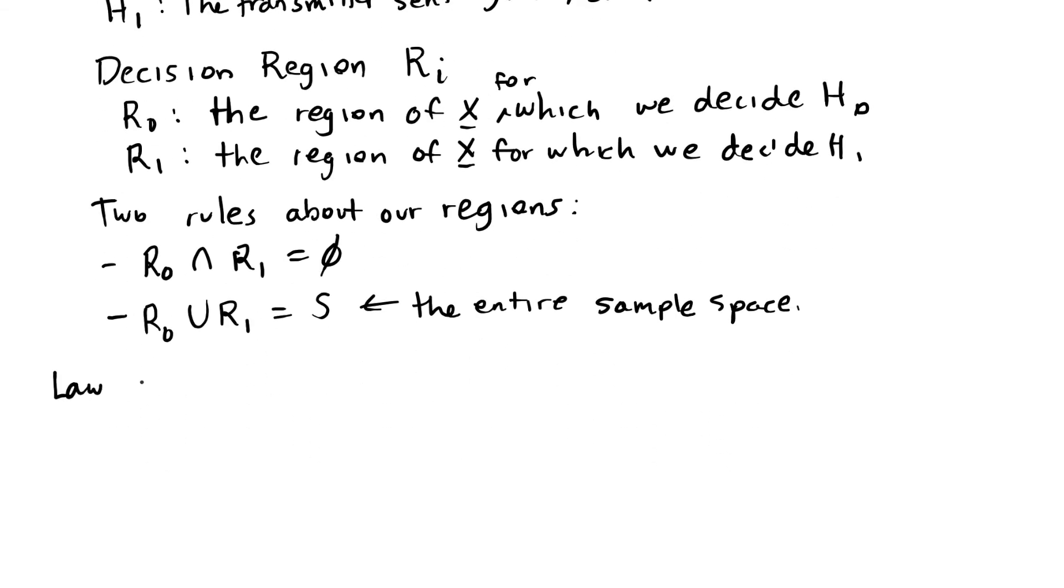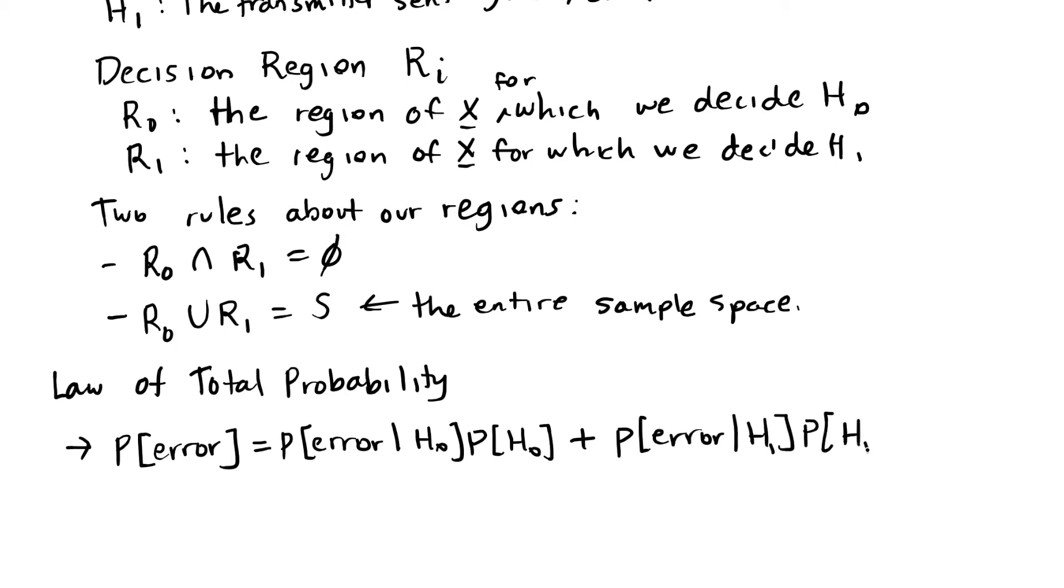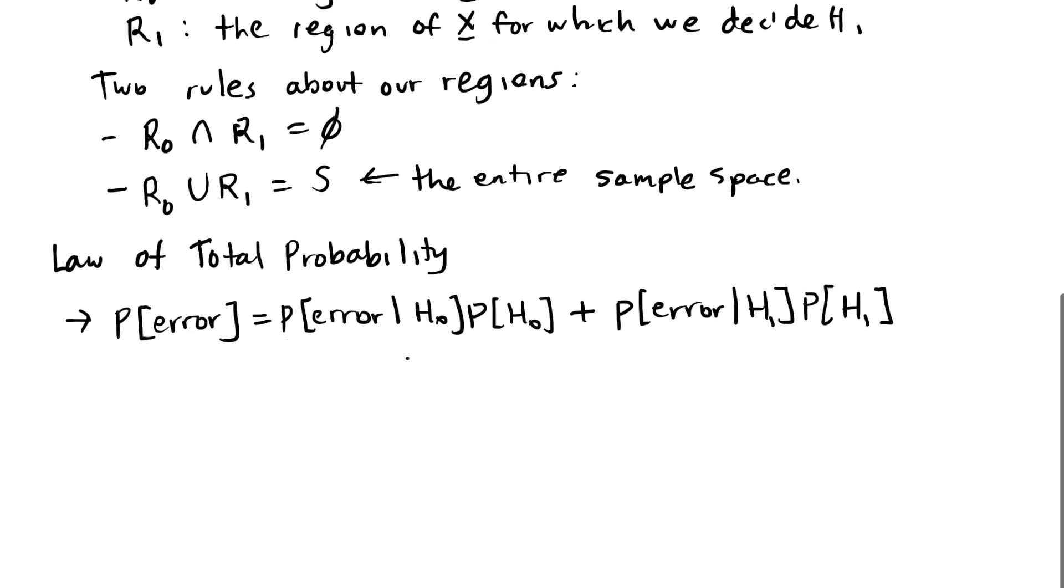In our last segment, we talked about using the law of total probability to write a formula for the probability of error, because H0 and H1 form a partition of our space. Either H0 happened or H1 happened. Our receiver doesn't send blanks, and it doesn't send both at the same time. We can divide up our total probability of error by saying we can have this type of error where H0 is true, but our receiver decides that symbol one was sent. Or, another type of error is that our transmitter sends symbol one, and our receiver makes an error, and thus receives symbol zero.